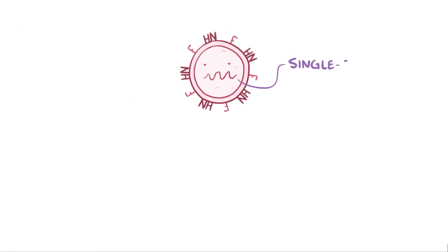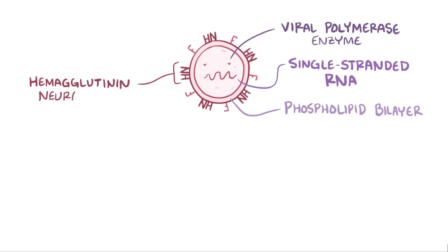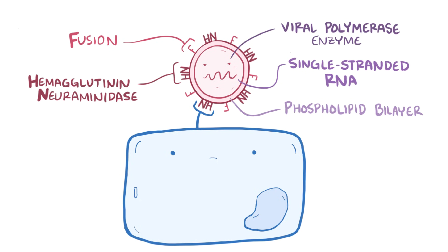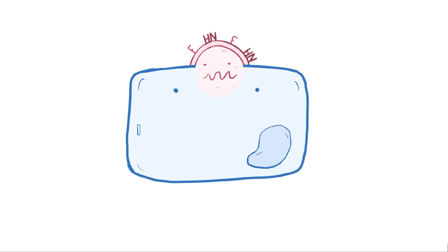The mumps virus has a single strand of RNA and a viral polymerase enzyme surrounded by a phospholipid bilayer envelope studded with the viral proteins hemagglutinin neuraminidase, or HN protein, and fusion, or F protein. The HN protein allows the virus to stick to a potential host cell and cut itself loose if necessary, and the F protein fuses the viral and cell membranes together, allowing the mumps virus to enter the cell.